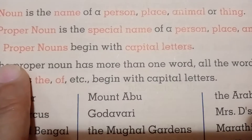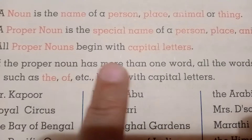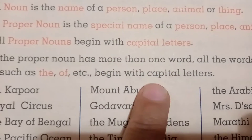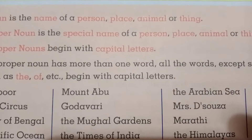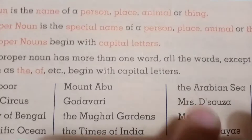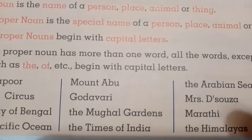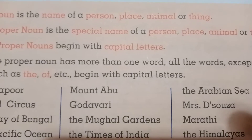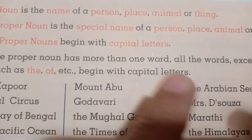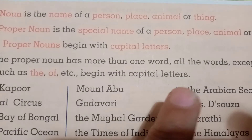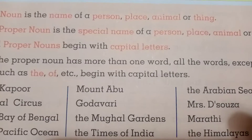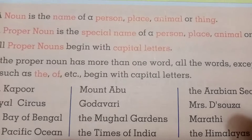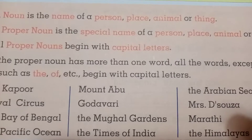Proper noun हम किसको बोलते हैं? वो नाम जो हम लोग किसी इनसान को, जगह को, animal को या वस्तु को देते हैं। जैसे आपका एक नाम है, आपकी मम्मी का एक नाम है, पापा का एक नाम है — वो नाम को हम लोग proper noun बोलते हैं। अभी कहाँ पे रहते हो, Badlapur में रहते हो — यह place है, तो यह भी एक proper noun है।